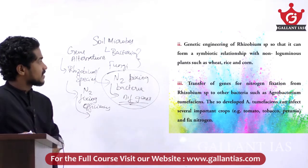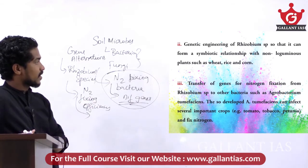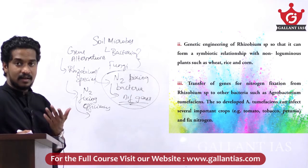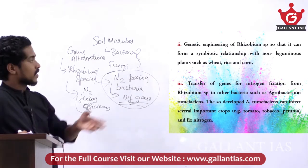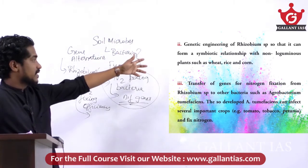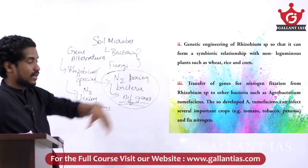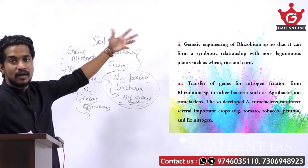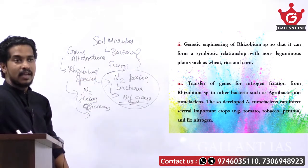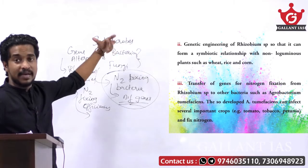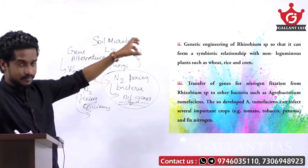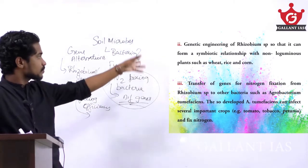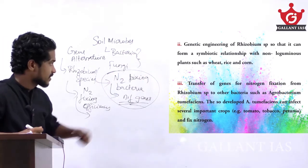Genetic engineering of Rhizobium species allows it to form a symbiotic relationship with non-leguminous plants such as wheat, rice, and corn. These non-leguminous plants have large production volumes but do not naturally have the ability to fix nitrogen. By carrying out gene alteration in Rhizobium species, it can form a symbiotic relationship with non-leguminous plants such as wheat, rice, and corn.